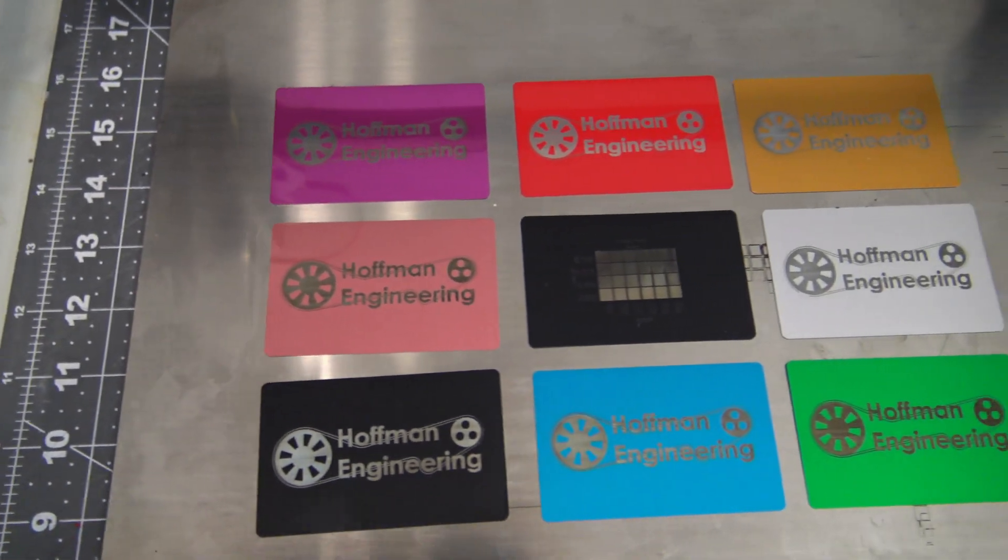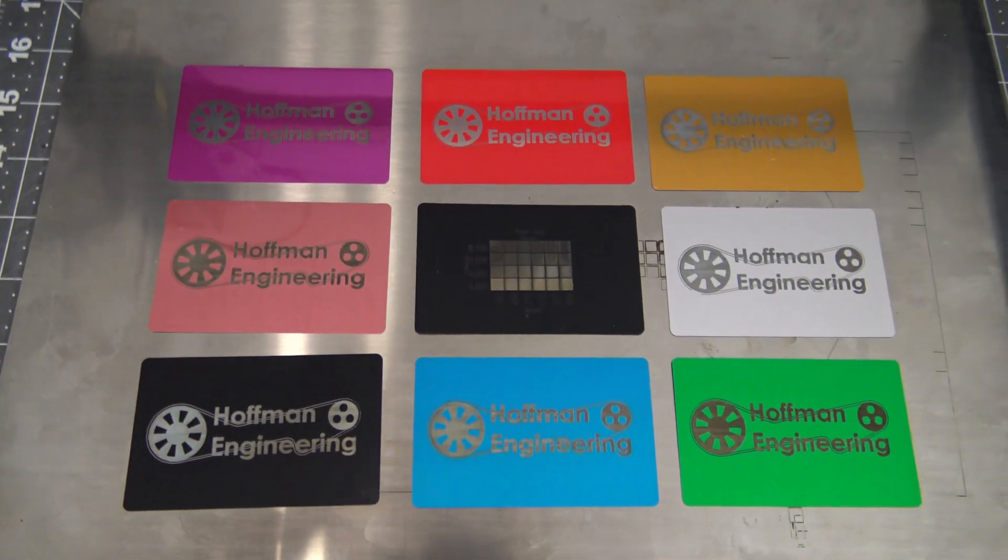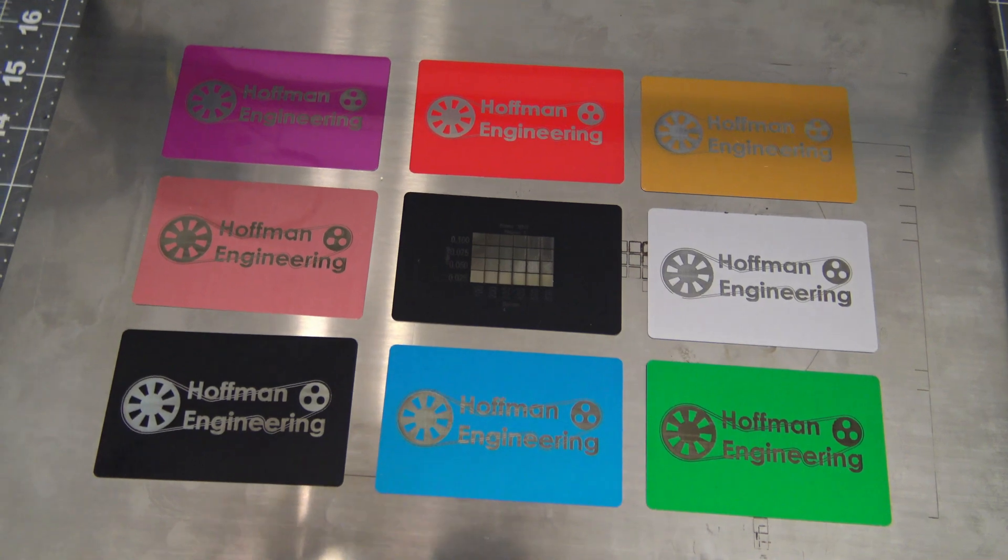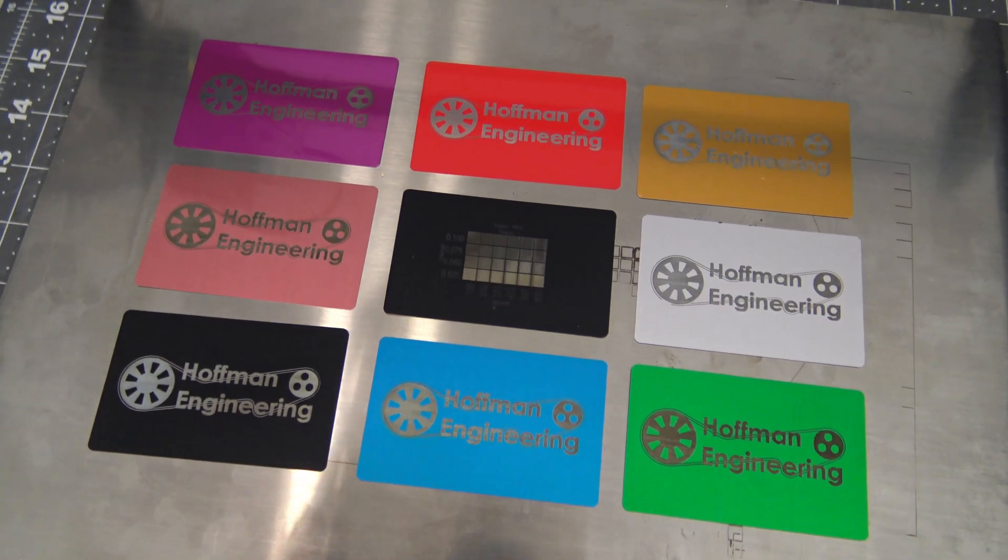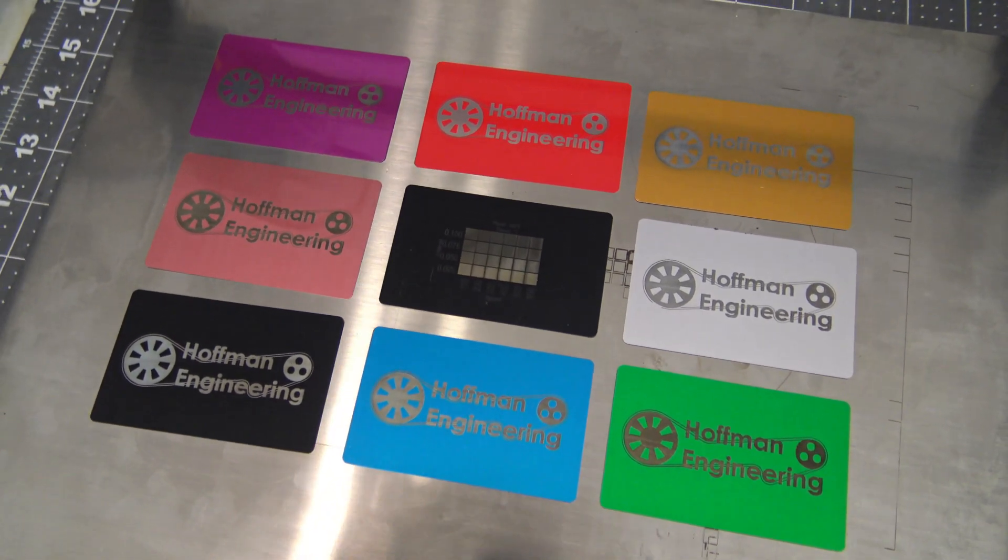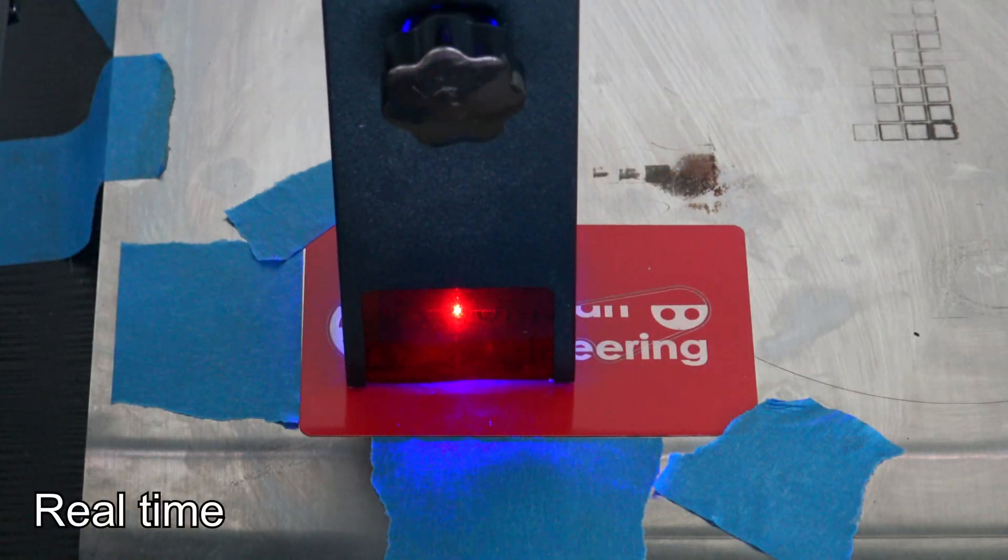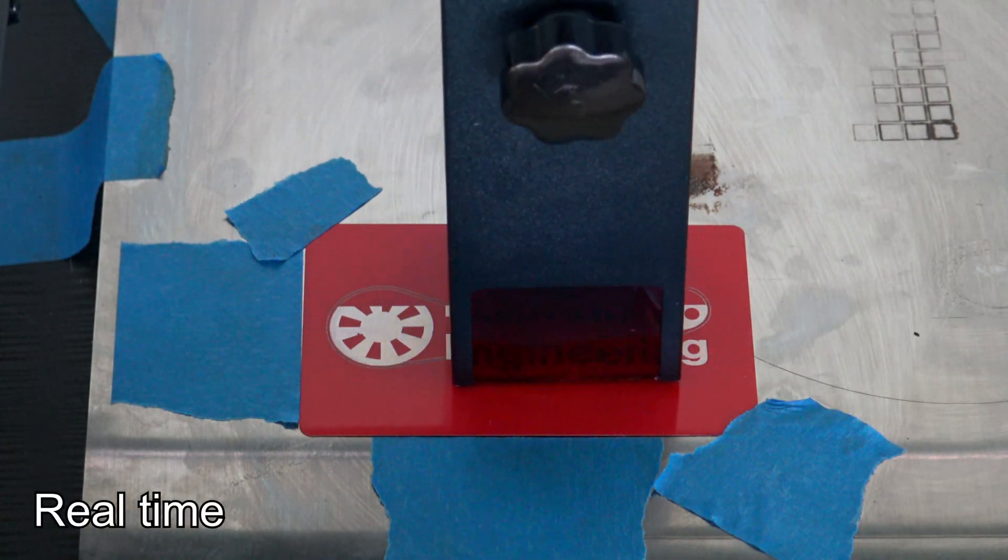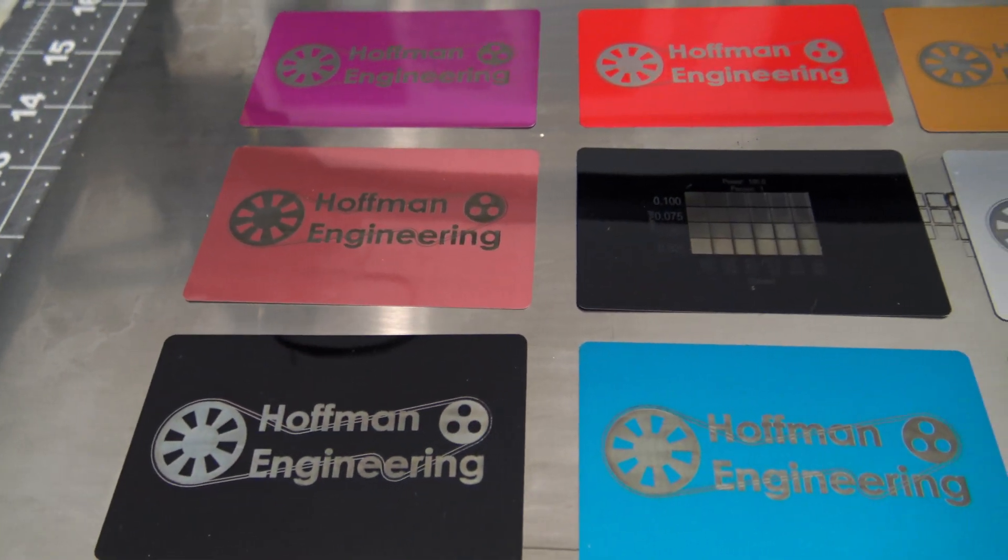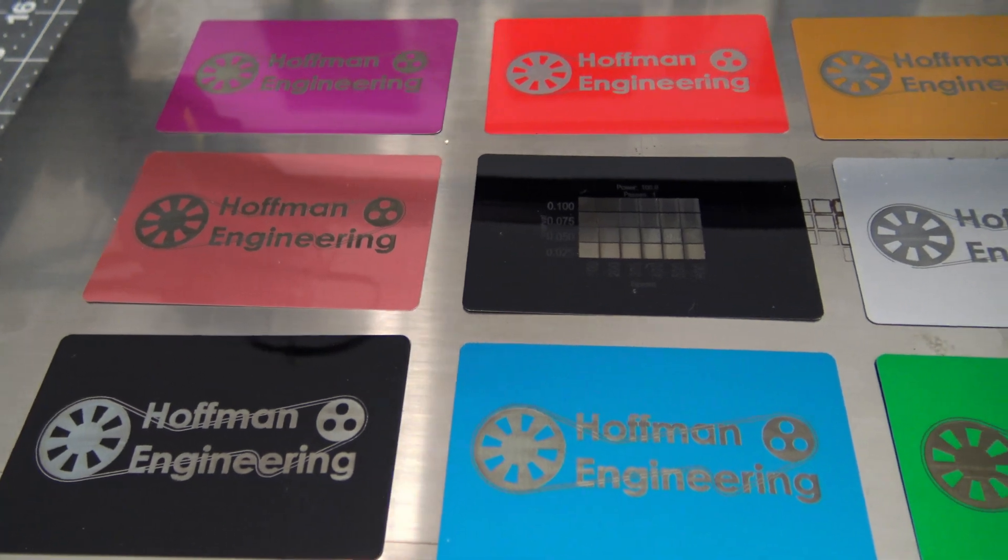Next on the list is Anodized Aluminum, or Aluminum Oxide. I picked up some blank Anodized Aluminum business cards on Amazon, and the A5 M50 Pro engraved them beautifully. I really like how well these turned out. They are slow to engrave. Each of these cards took a good 40 minutes to finish, but if you are looking to engrave Anodized Aluminum, these are excellent results.